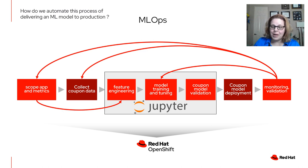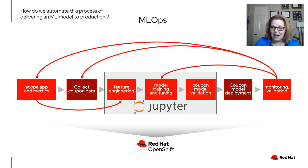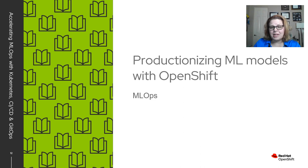Now that we've seen how to create a model using the Red Hat OpenShift Data Science platform, we need to step back and consider MLOps. The question is: how do we automate the process of delivering a machine learning model to production? We've scoped out apps and metrics, done feature engineering, collected data, monitored and validated our model, and done model training and tuning. The next step is how do we automate all of that? There are ways, and we're going to go further into MLOps.